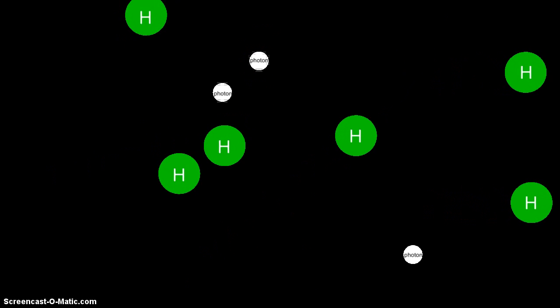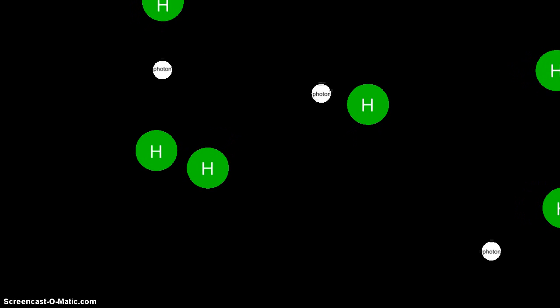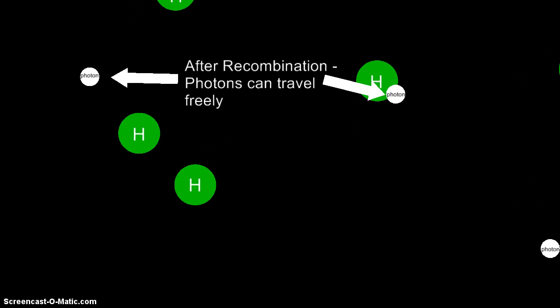The process of recombination produced the last scattering, or the last time that photons were scattered by the plasma before it condensed into neutral matter and allowed the photons to adopt straight trajectories.